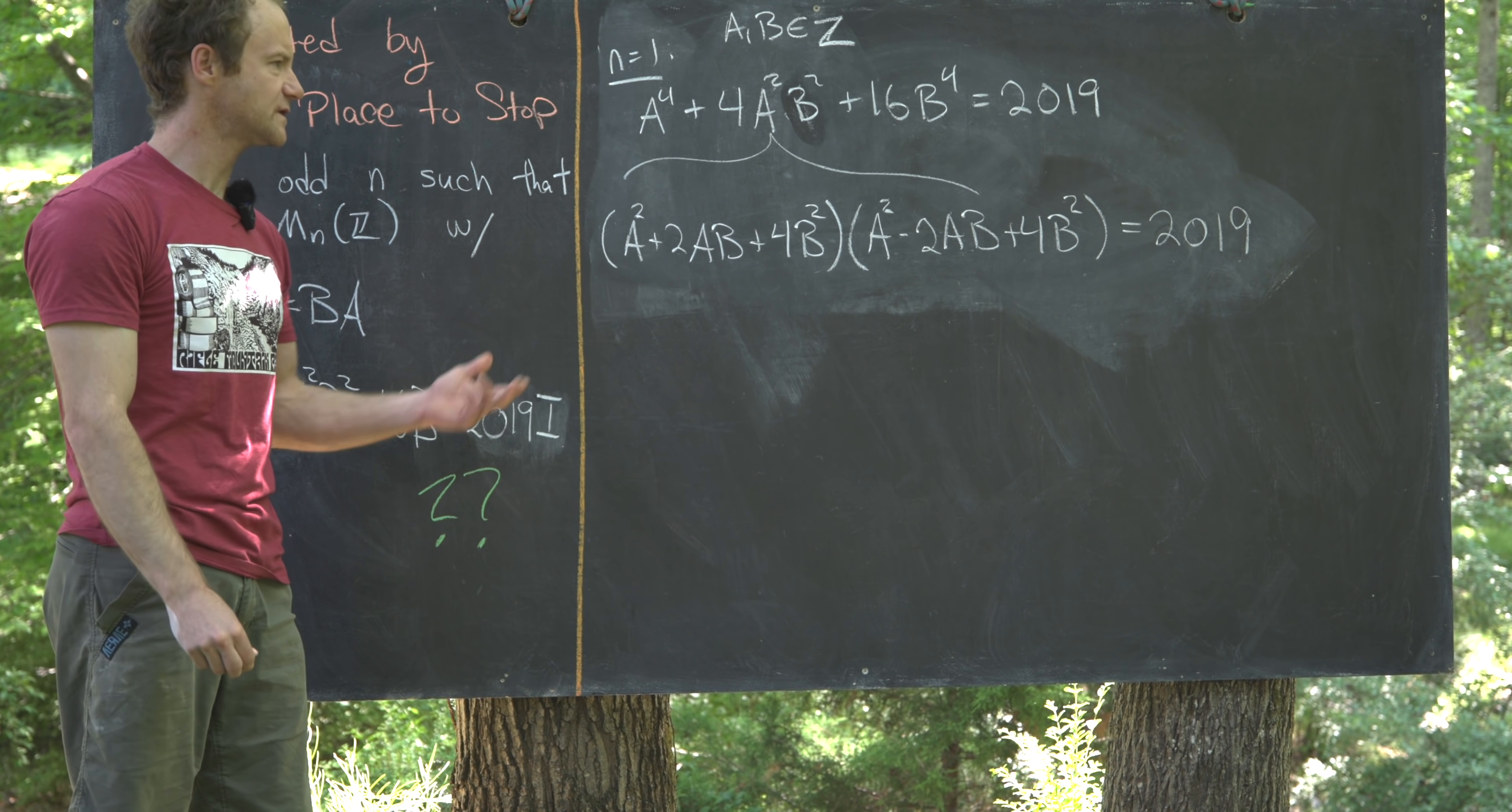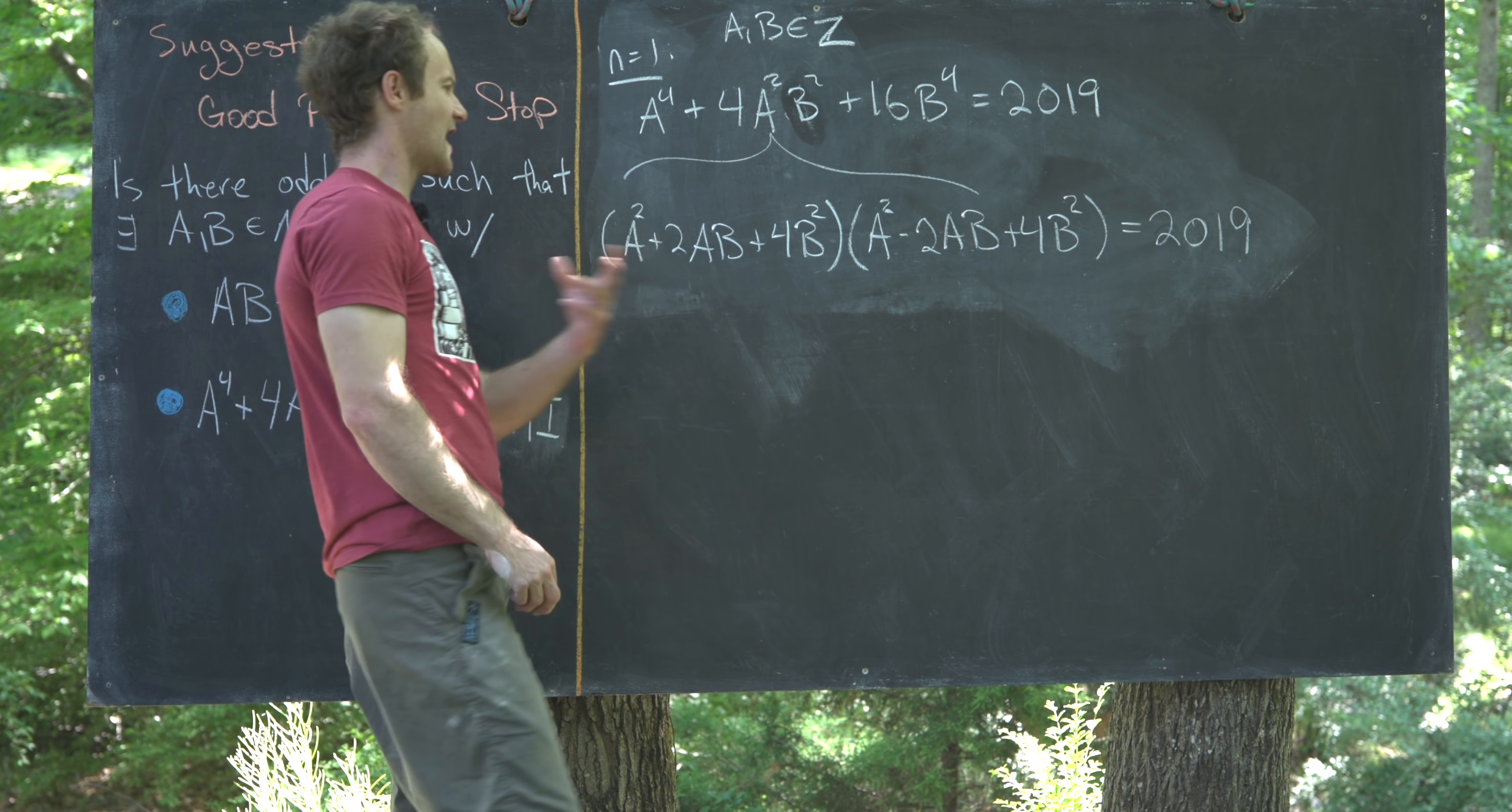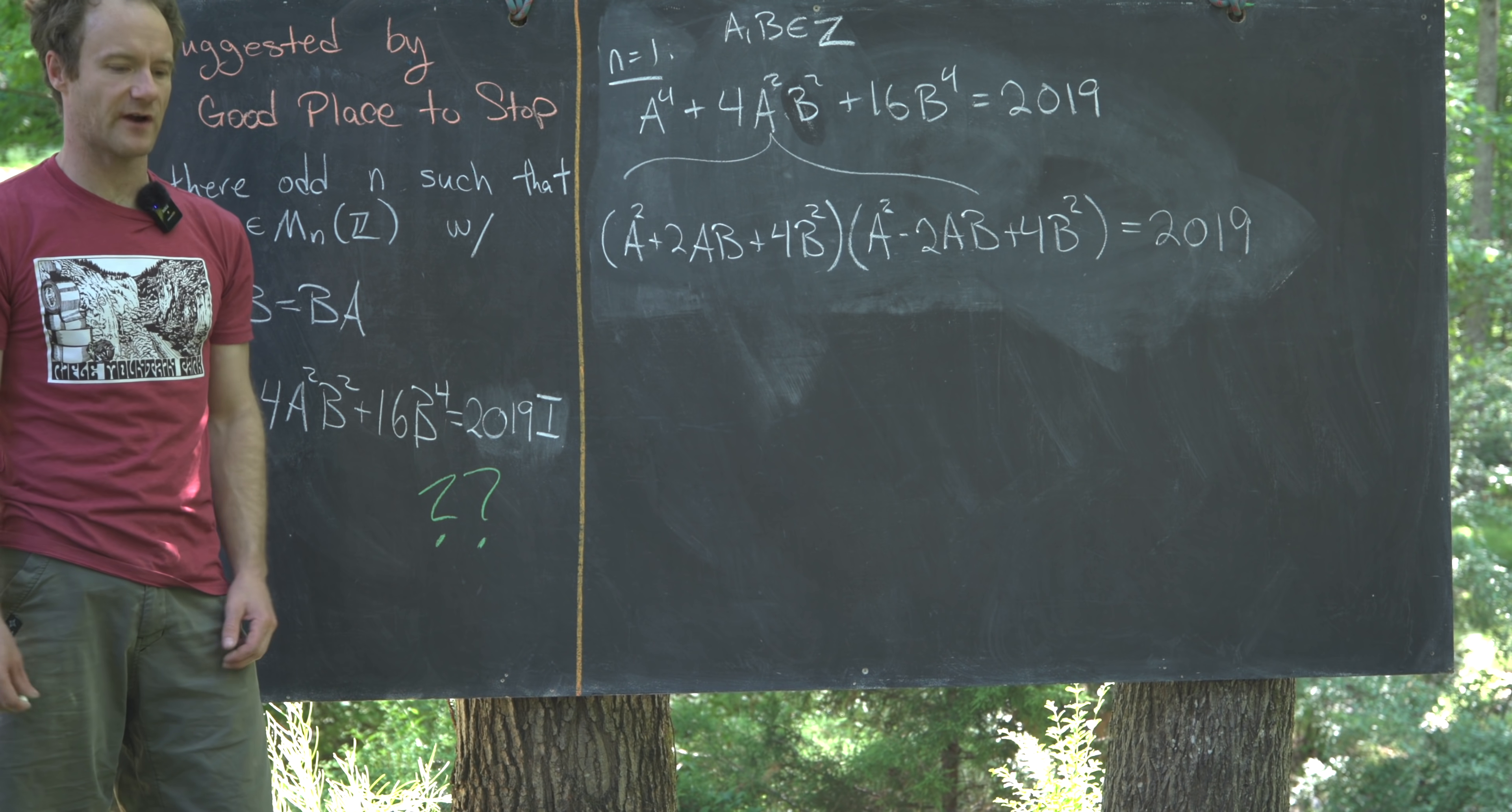Now maybe the most obvious thing to do at this stage would be to factor 2019 into primes, and then try to match this quadratic and this quadratic with some combination of that prime factorization, solve for a and b.